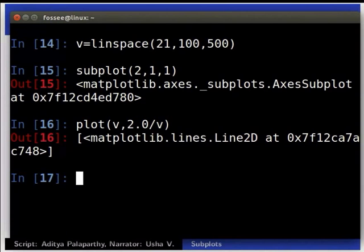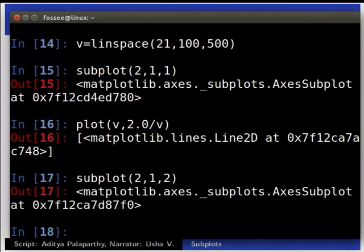Now, we can create the second subplot and draw pressure vs. temperature plot as follows. subplot 2 comma 1 comma 2. Plot 200 comma 2.0 divided by V.